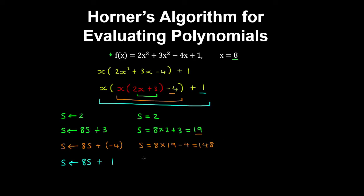That gives 148. And finally, we have s equal to 8 by the previous result, which is 148, plus 1. So that gives 1185. You can compare this result in your calculator by evaluating the polynomial when x equals 8.